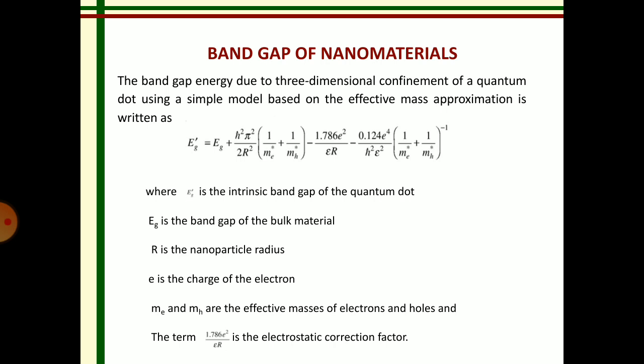The band gap energy of a quantum dot using a simple model based on the effective mass approximation is written as: E_g' = E_g + (ℏ²π²)/(2R²) × (1/m_e* + 1/m_h*) − 1.786 e²/εR − 0.124 e⁴/(ℏ²ε²) × (1/m_e* + 1/m_h*)⁻¹. Note that the second term contains h²π² (not ℏ²) in some formulations — as clarified during the explanation.